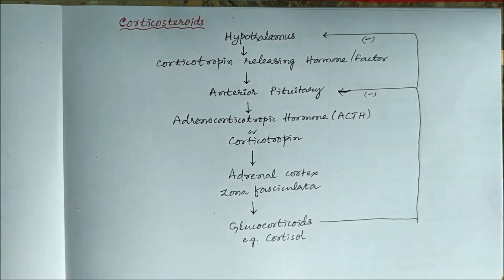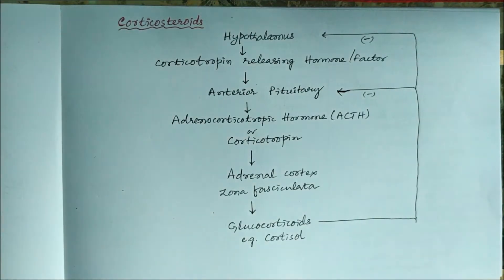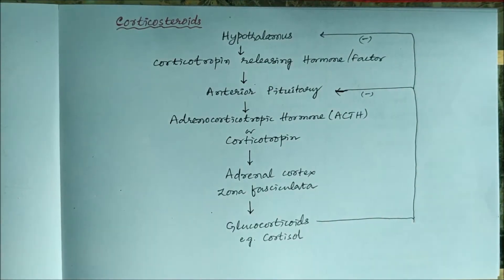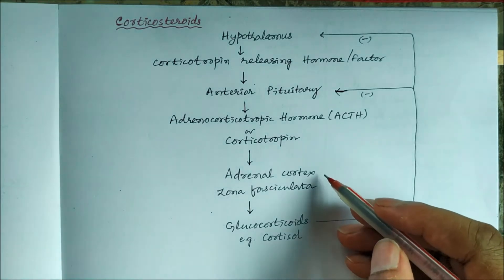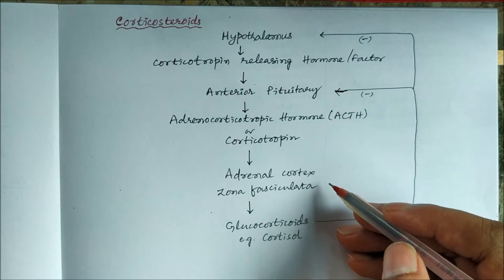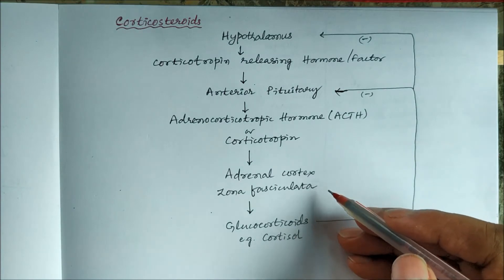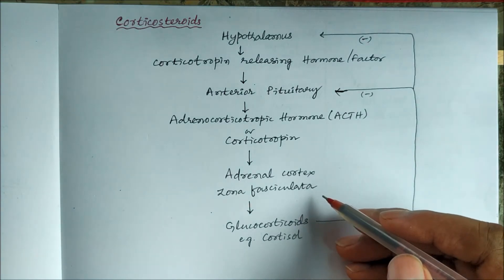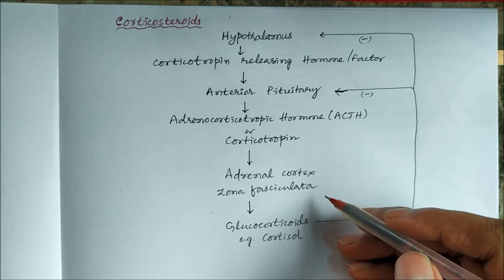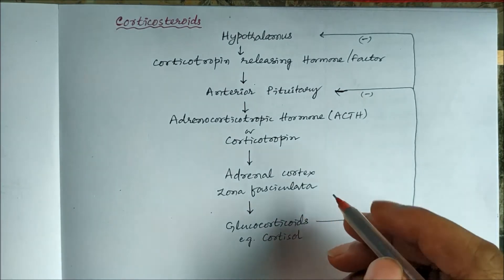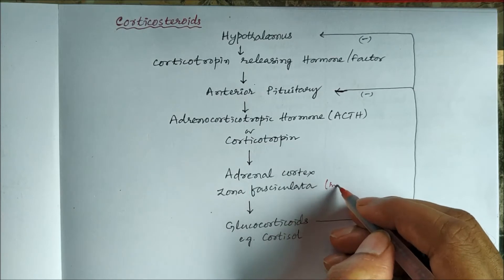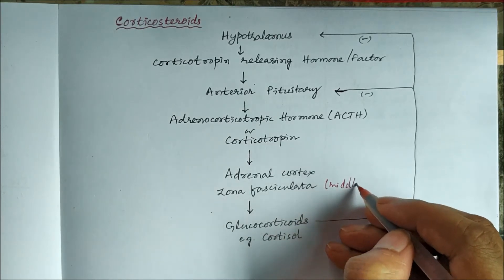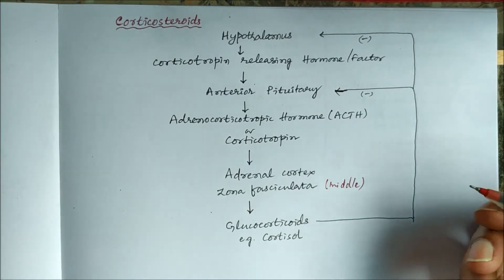Today we will study corticosteroids, which are secreted from the cortex of the adrenal gland. The adrenal cortex has three layers: zona glomerulosa, which is the outer layer; zona fasciculata, which is the middle layer; and zona reticulata, which is the inner layer.